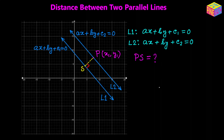Now let's first discuss the equations of the two parallel lines. I have assumed that the equations are ax + by + c₁ = 0 for the first line, and for the second line the equation is ax + by + c₂ = 0.